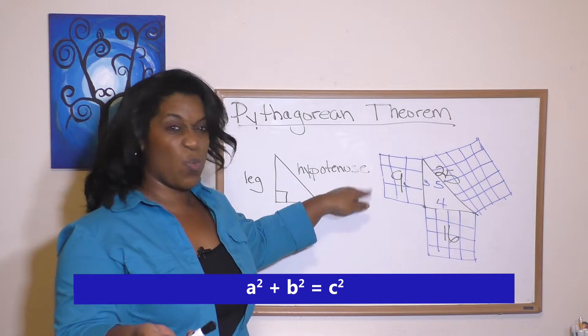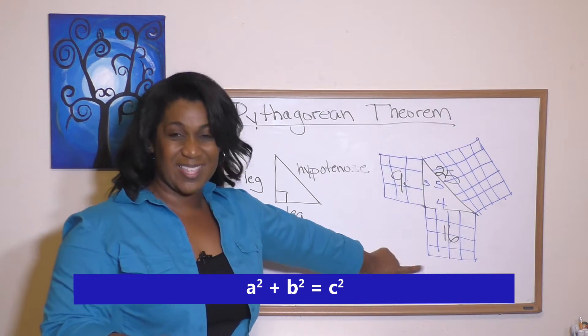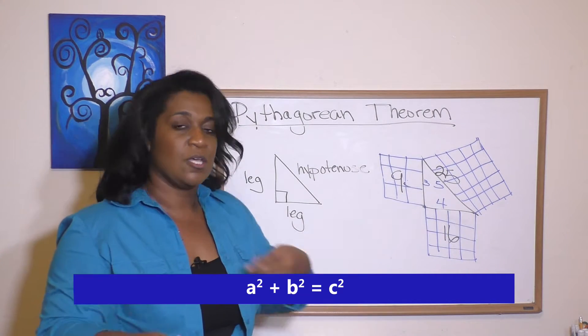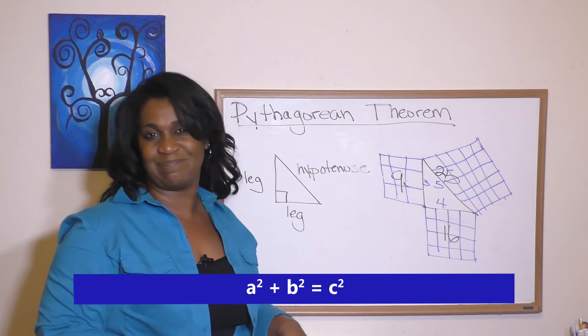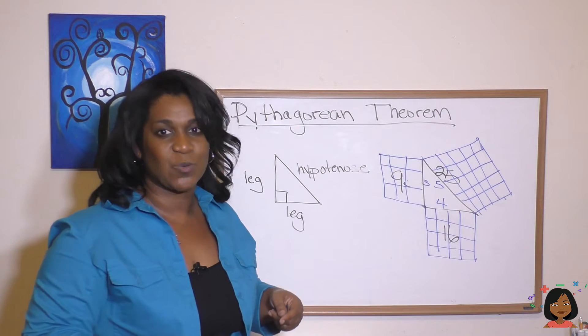So all of that to say that this side, which we're going to call a squared, plus this side, we call that b squared, equals that side, which is c squared.